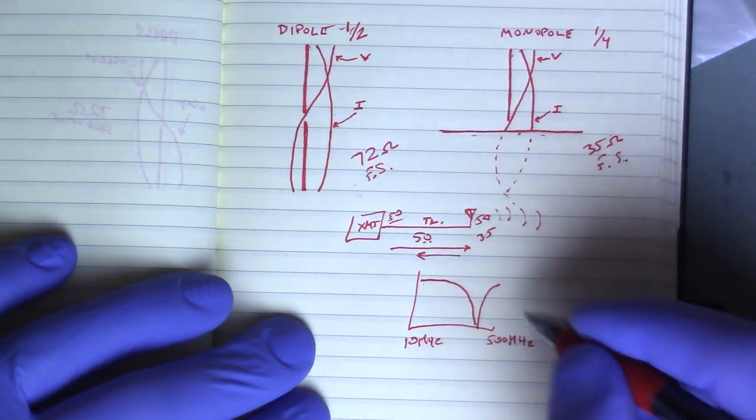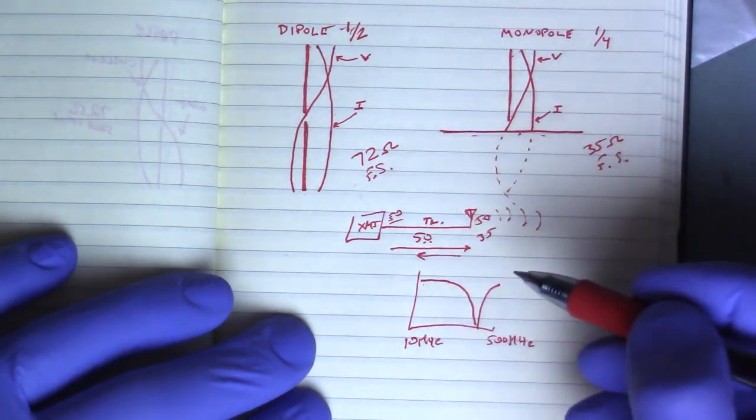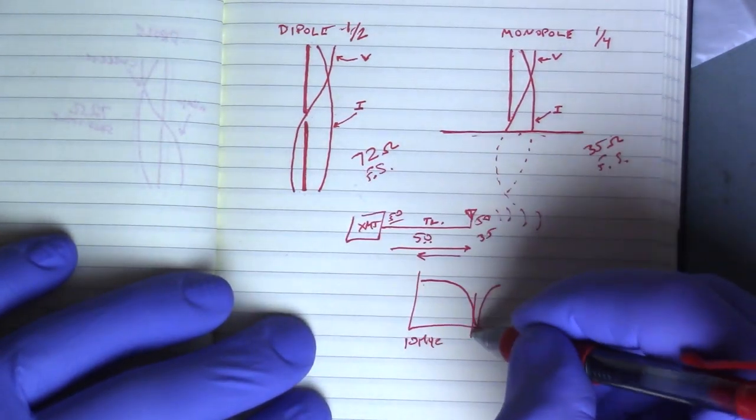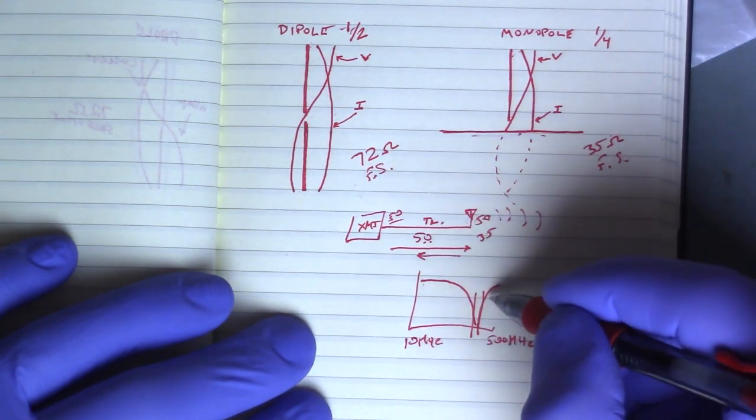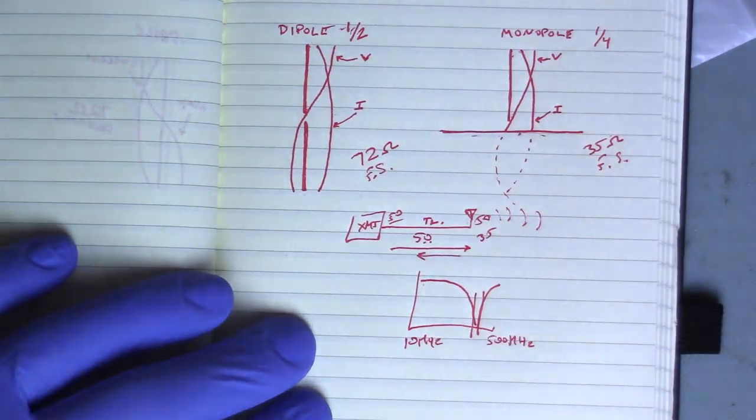And as we increase the frequency outside of the band we've cut it for, we should see energy coming back to the transmitter as well. Now I need to make sure that my transmitter only operates within a certain bandwidth inside of this where the return loss is the lowest. That means all the energy is getting out to the antenna, which is what we want.